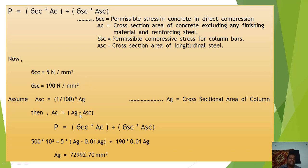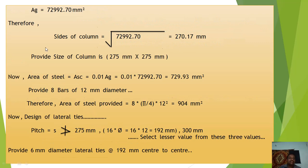Here, Ac = Ag − Asc, where Ag is the gross cross-sectional area of the column. Substituting values into P = σcc × Ac + σsc × Asc, we get Ag = 72,992.70 mm². Since the column is square, the side = √72,992.70 = 270.17 mm. Rounding up to the higher side, provide a column size of 275 mm × 275 mm.